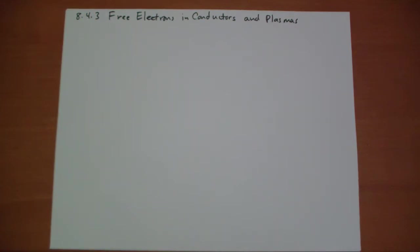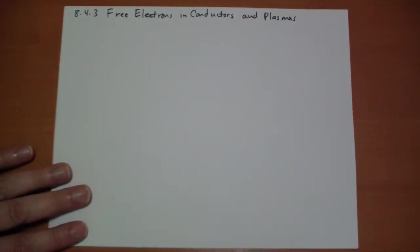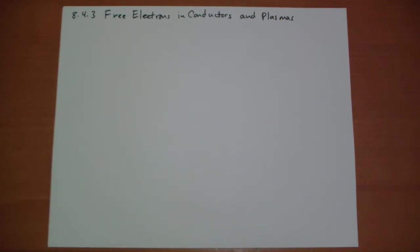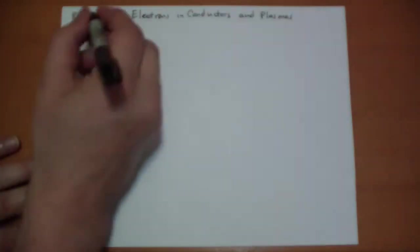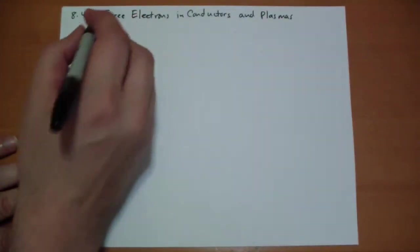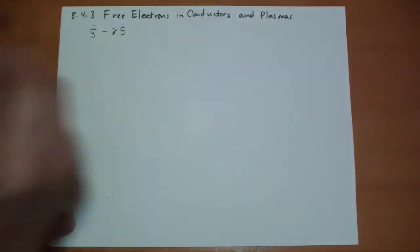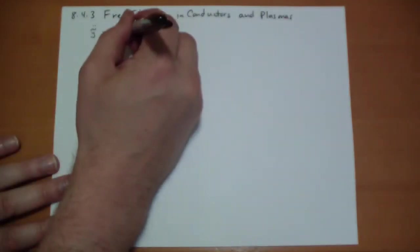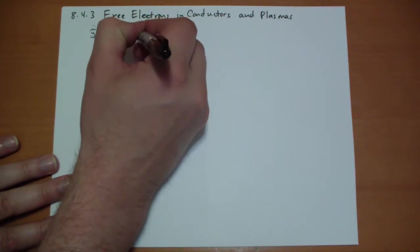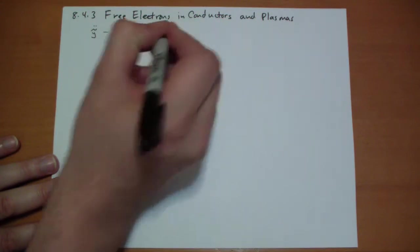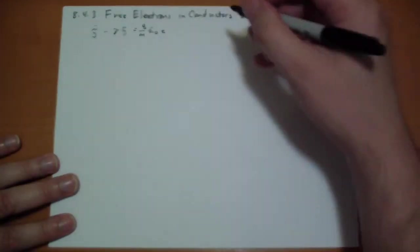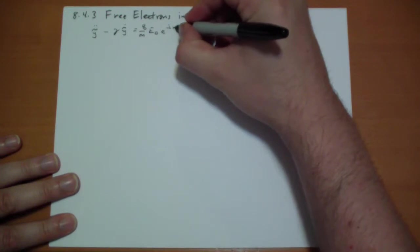However, we still do have a damping force and, of course, the force from the driving electric field. And since there's a mass involved, we have to think about the mass of the electron. So the equation looks like this. We have y-complex, second derivative with respect to time, minus the damping.